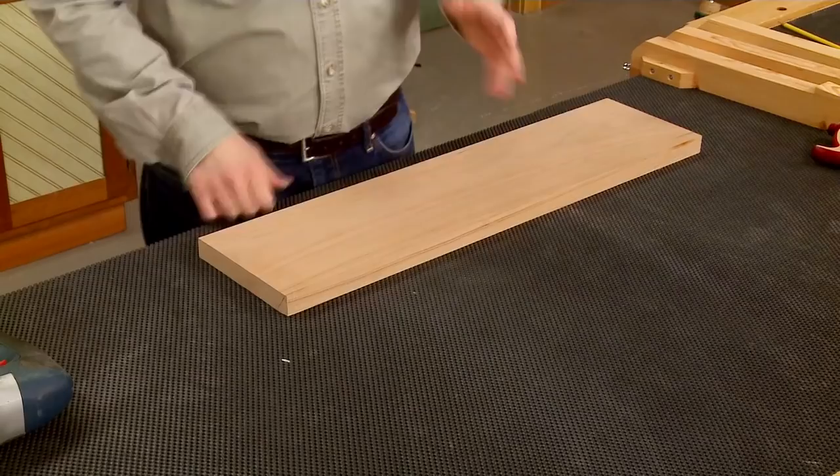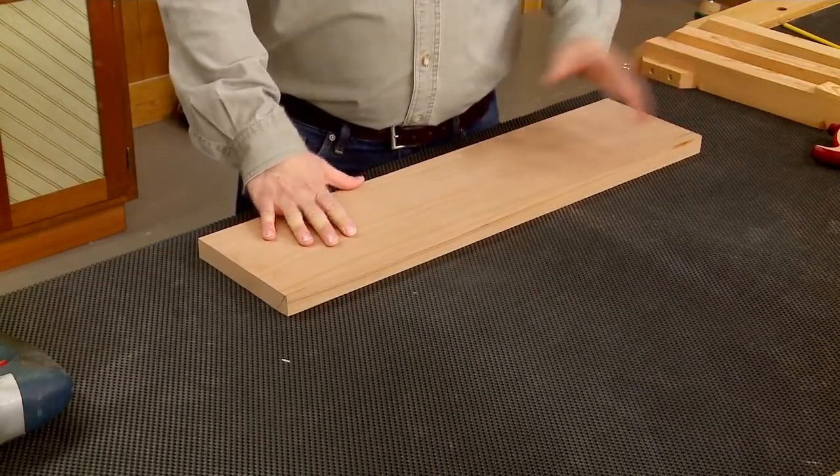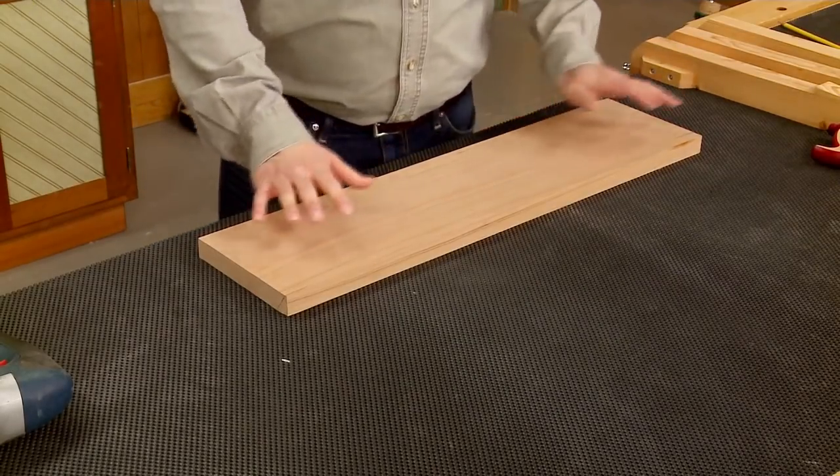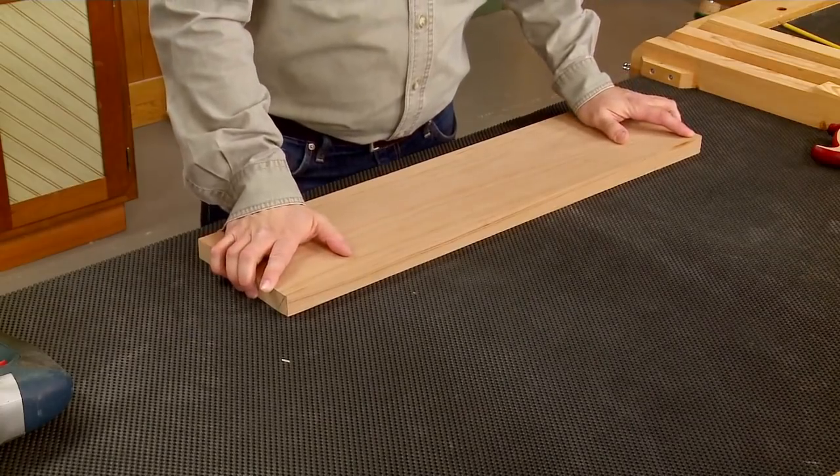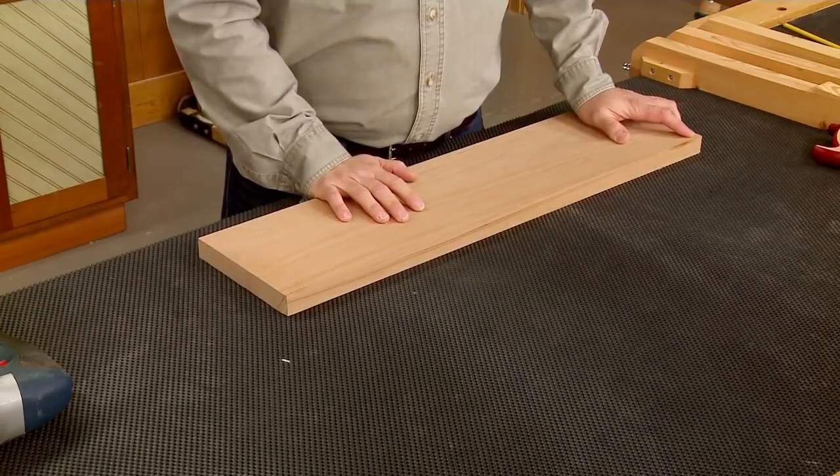When I'm here at the bench, I want to make sure that the piece that I'm working on isn't going to move around when I'm working on it. So most of the time what I'm going to use are clamps or bench dogs to hold it in place firmly to the top of the workbench.